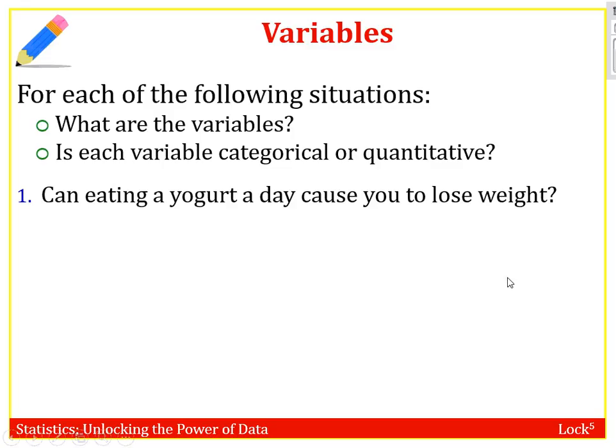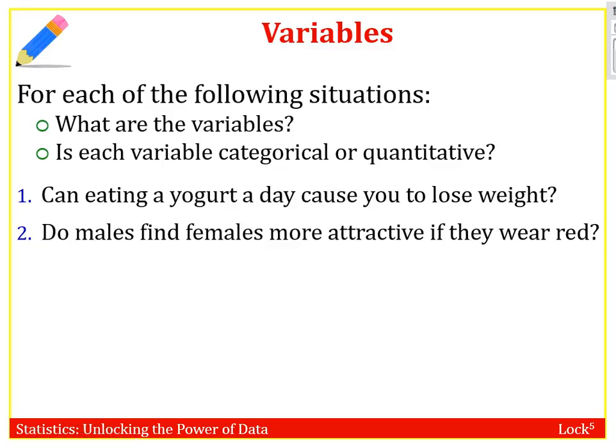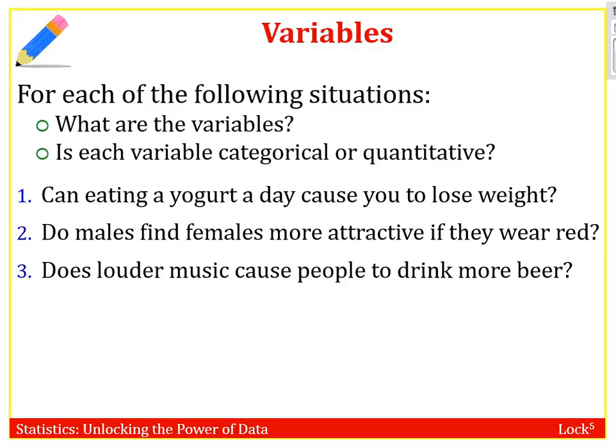Our variables here are: do you eat yogurt or not (yes or no) and how much weight you lost. Eating yogurt — yes or no — is categorical. Weight loss is represented as a number, so that's quantitative. For do males find females more attractive if they wear red: wearing red or not is one variable, and being more attractive or not is the other — both are categorical. Here, our variables are how loud the music is, typically measured in decibels, which is a number, so that's quantitative, and how much beer people drink — measured in number of beers or ounces — so that's also quantitative.